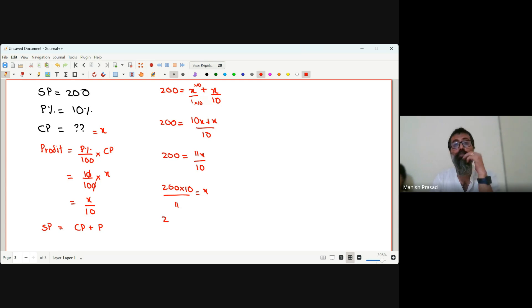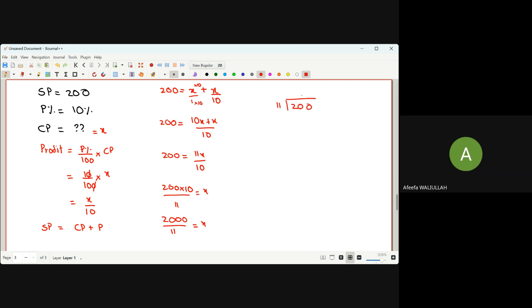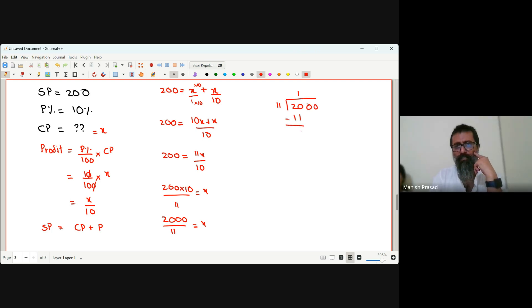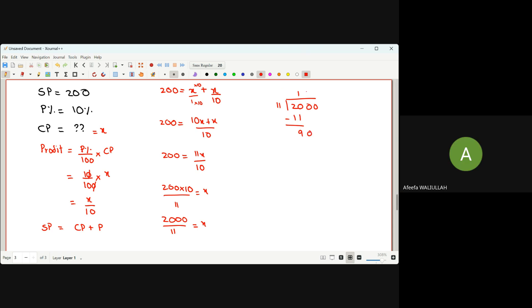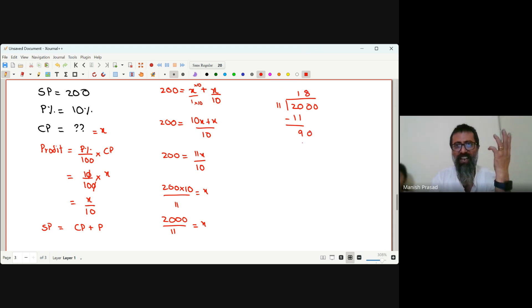If we know the 11 times table, if we don't know we do a long division. Who doesn't know 11? Lots of people don't know.